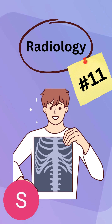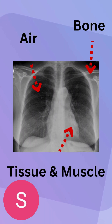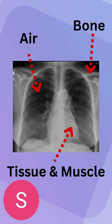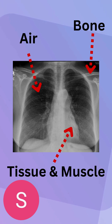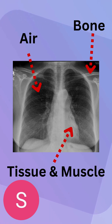Gosh, it's been forever. Just to quickly recap — hair, bone, and tissue/muscle correspond to our black background in X-rays. Also remember, whenever X-rays show the R and the L, those are indicating the anatomical left and right sides of the human body.